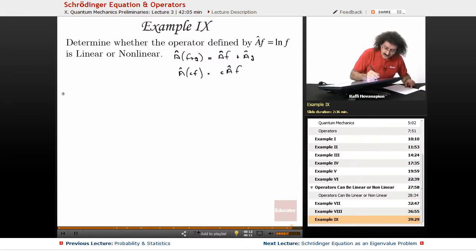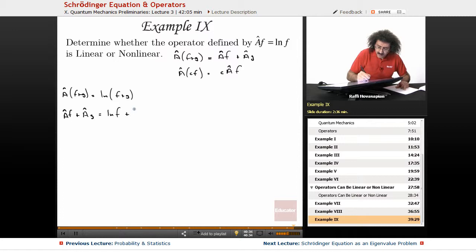Okay, well let's go ahead and do A(f+g) is equal to the natural logarithm of (f+g). Well, let's see, A(f) + A(g) is equal to the natural logarithm of f plus the natural logarithm of g. This and this do not equal each other. They do not equal each other.